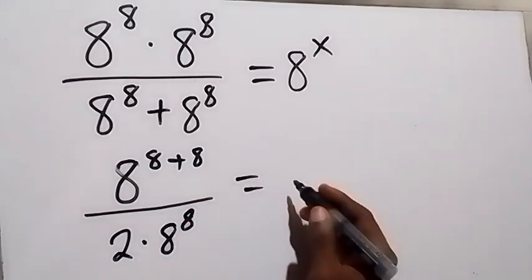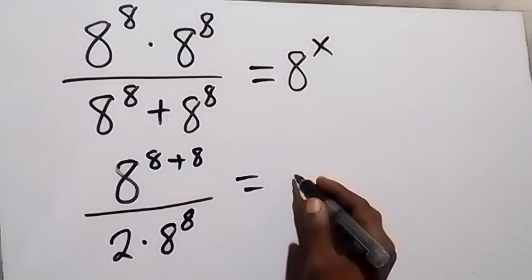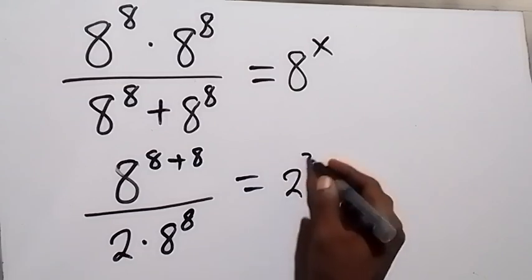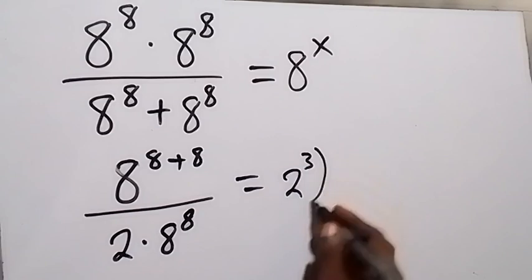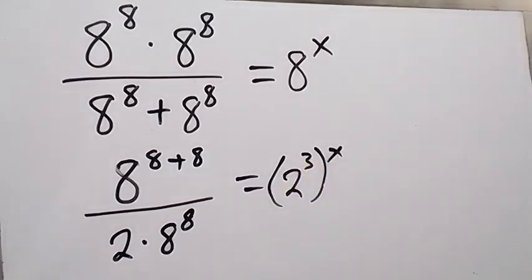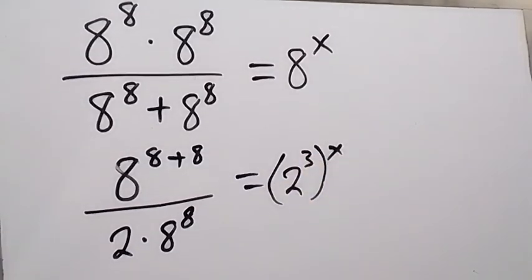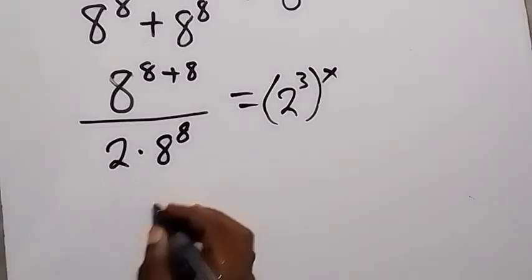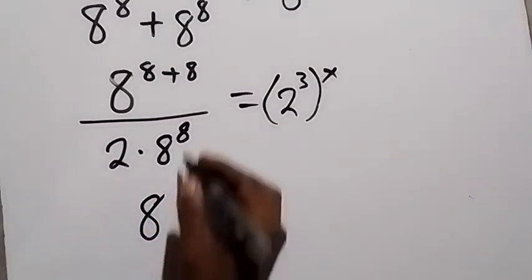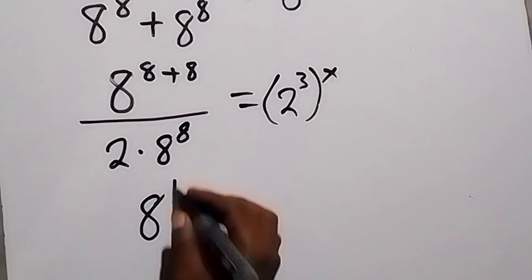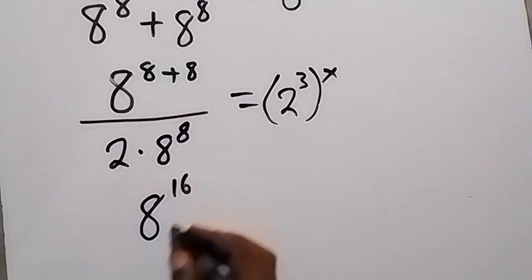On the right-hand side we can change the base to 2, that's 2 raised to power 3, then raised to power x. On the left-hand side, the numerator becomes 8 raised to power 8 plus 8, that's 16, then divided by the denominator.